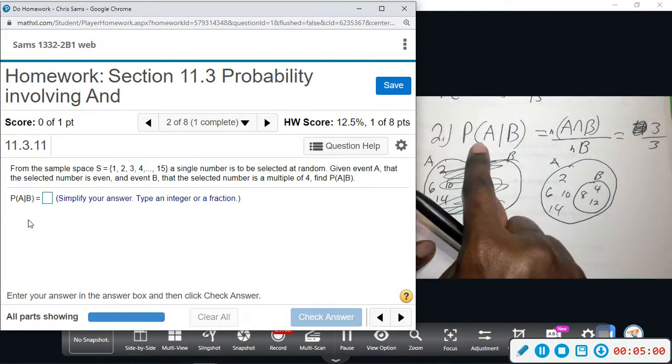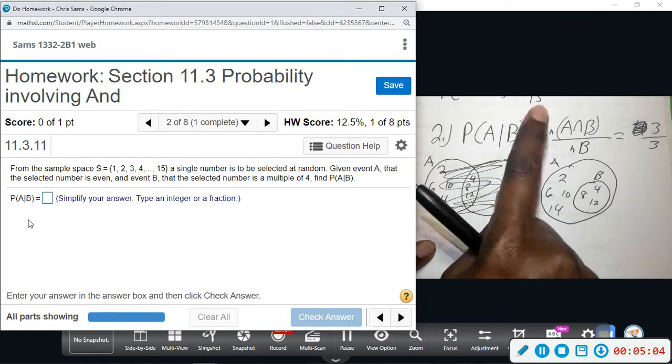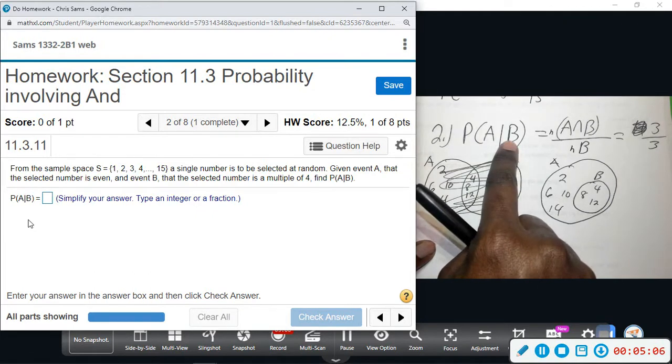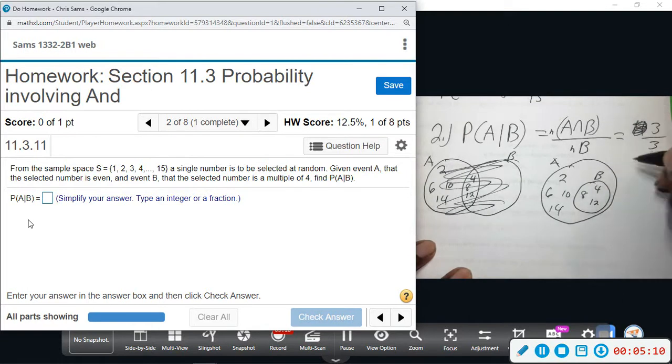So what this is: the probability that you get an even number given that you got something that's a multiple of four. And all these are also even, tells us three out of three, which is equal to one. So it's a 100% chance. You're guaranteed that the number is even if it's a multiple of four. That's what this says.